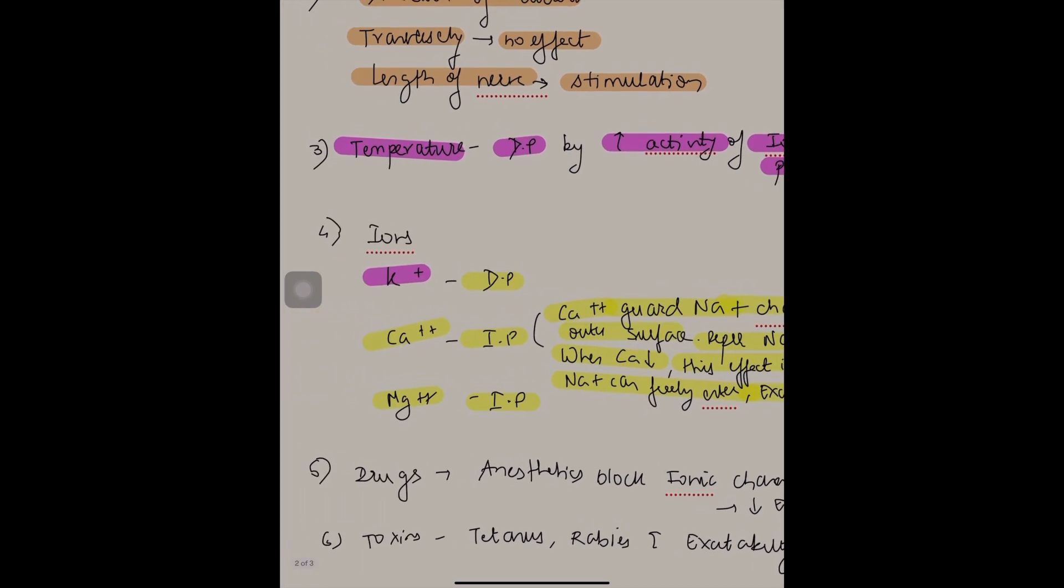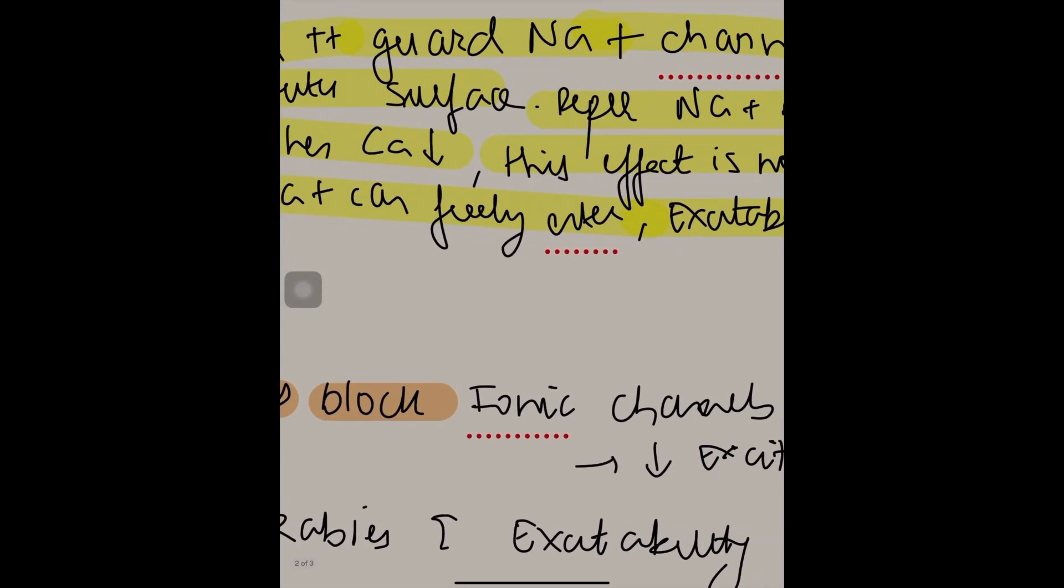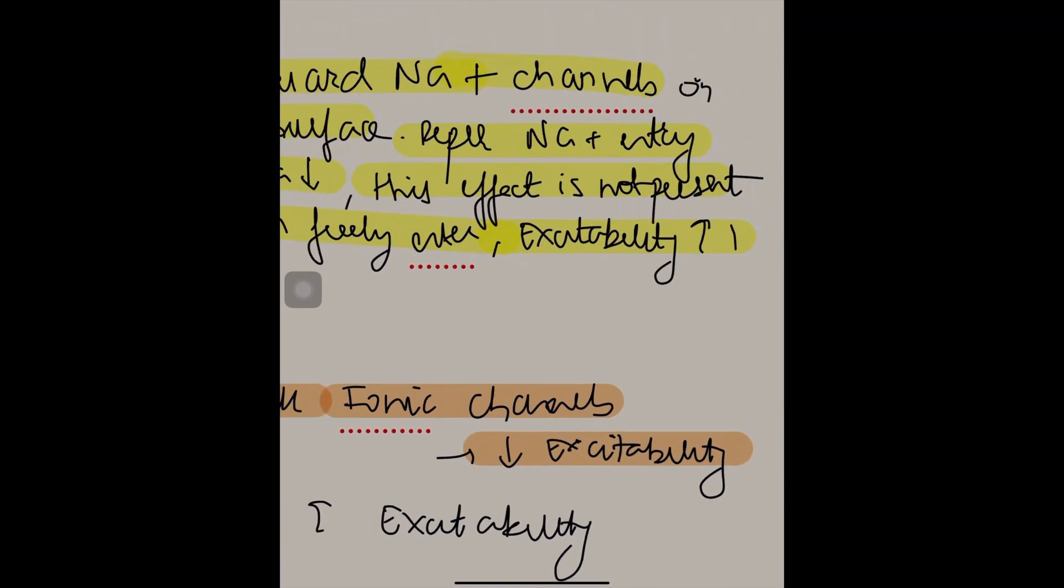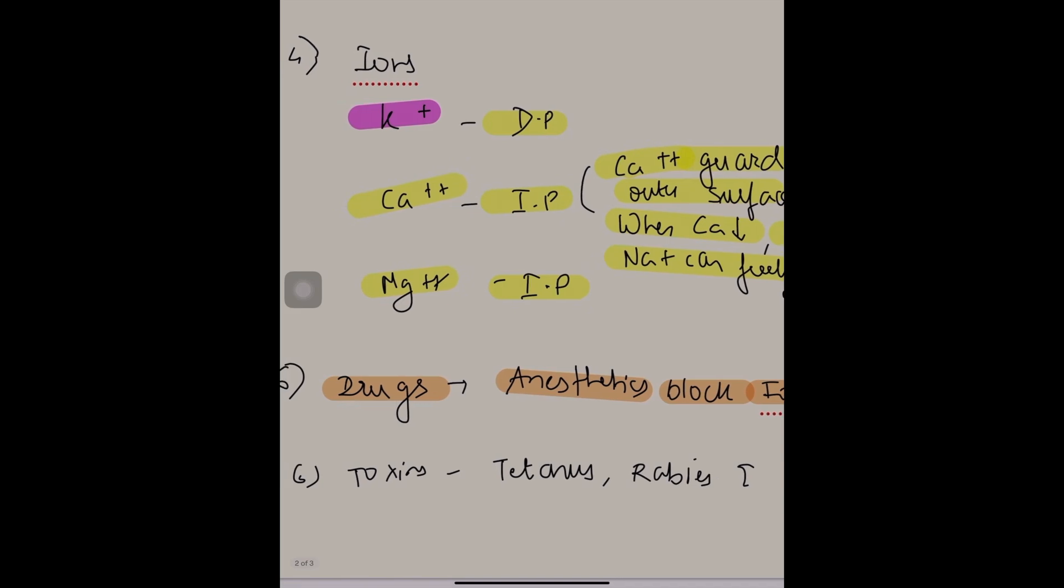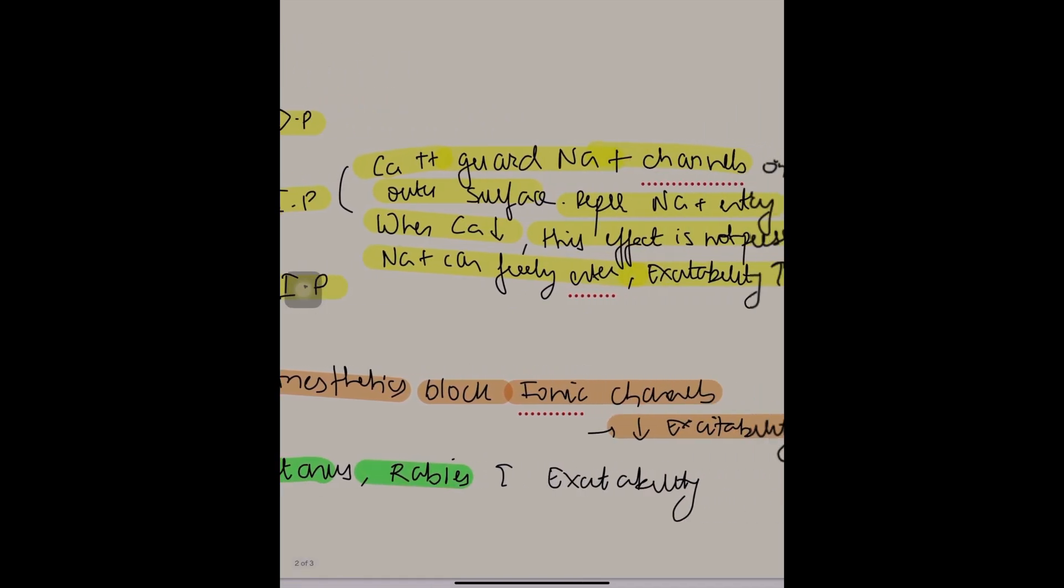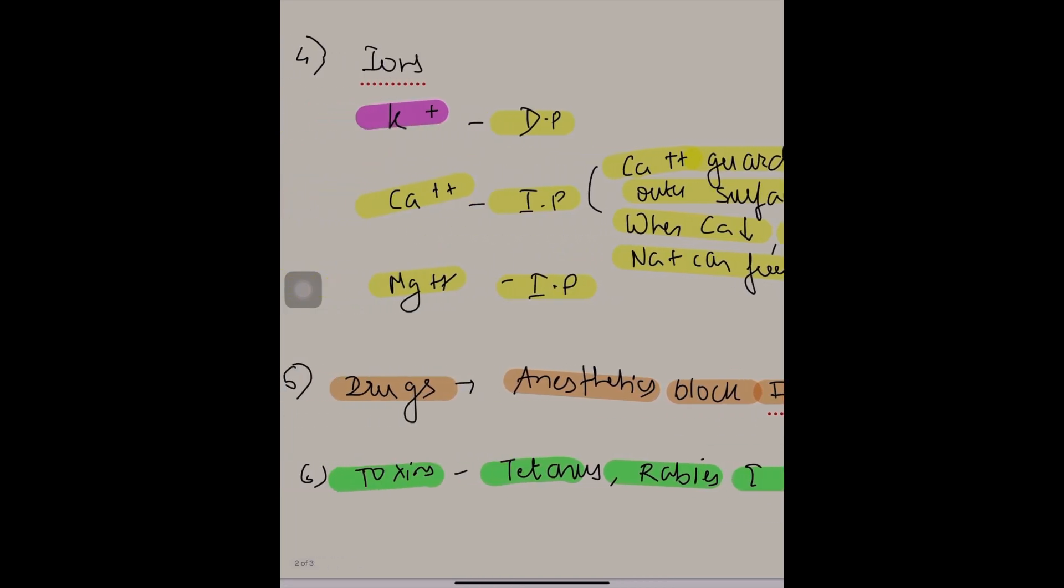Now let us go to the next factor, that is drugs. Anesthetics block ionic channels. This decreases excitability. And the last but not the least is toxins. Tetanus and rabies increase excitability.